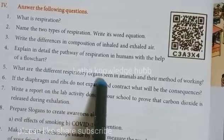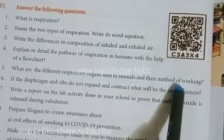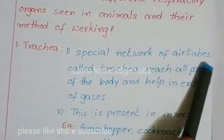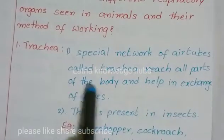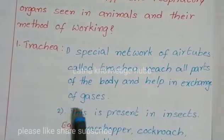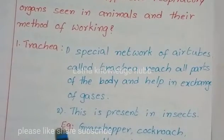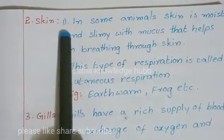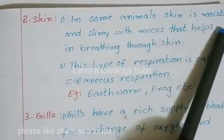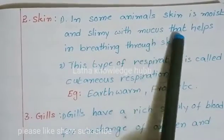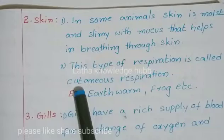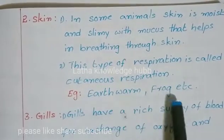What are the different respiratory organs seen in animals and their method of working? First, Trachea: a special network of air tubes called trachea reach all parts of the body and help in exchange of gases. This is present in insects such as grasshopper, cockroach, and honeybee. Second, Skin: in some animals the skin is moist and slimy with mucus, helping in breathing through skin. This is called cutaneous respiration, seen in earthworms and frogs.